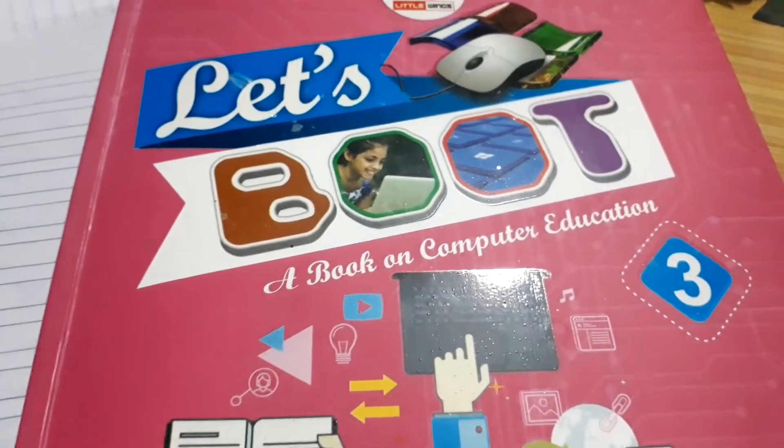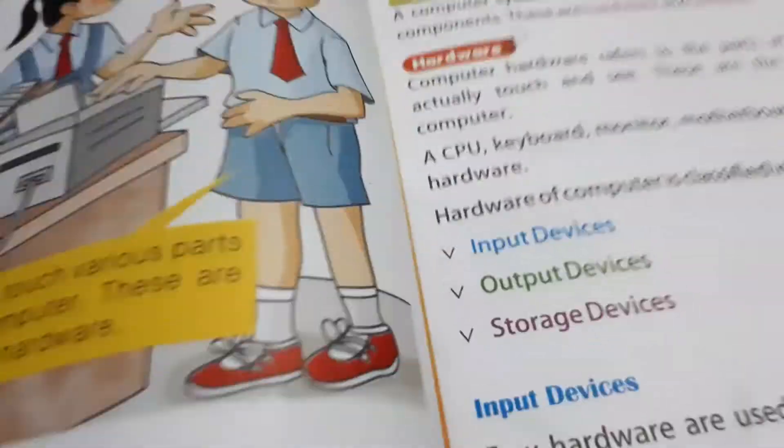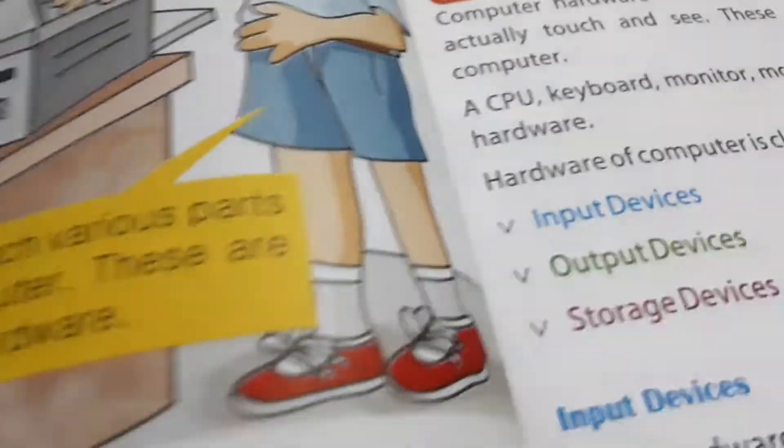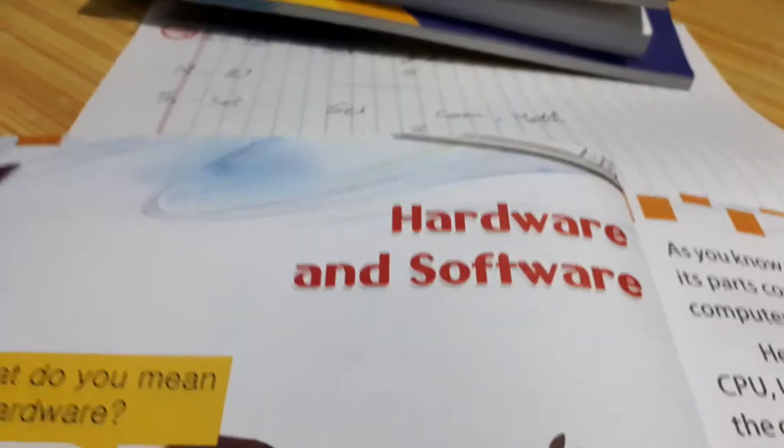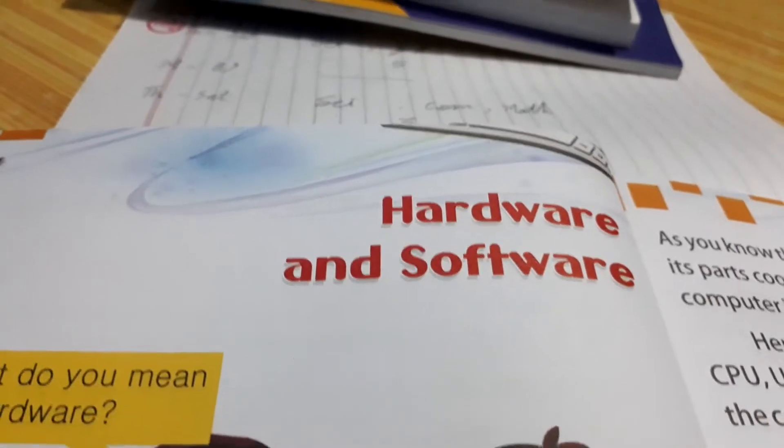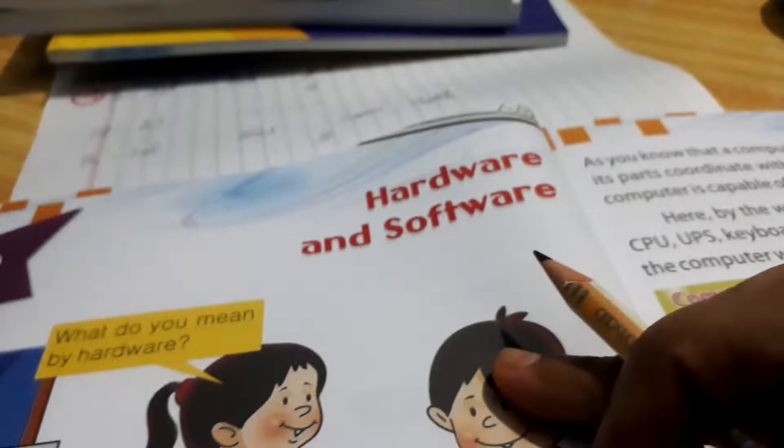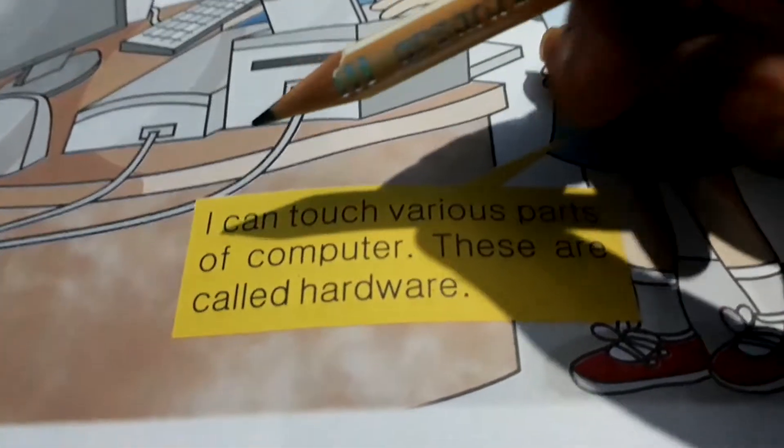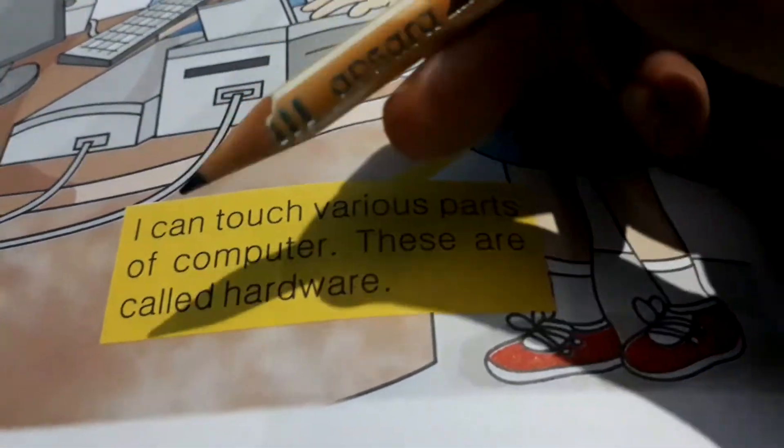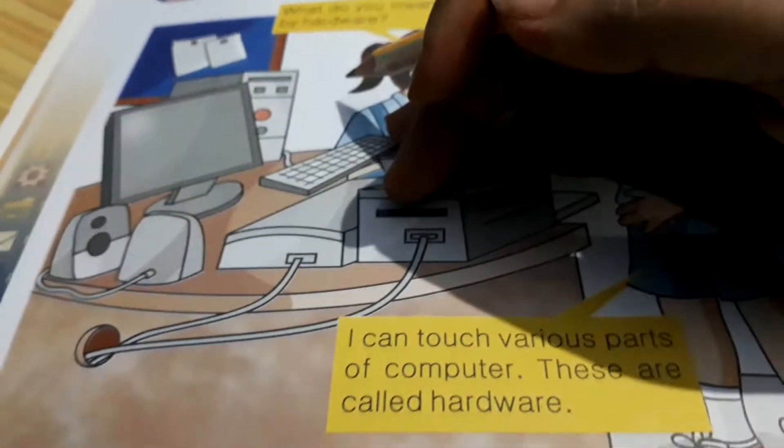Okay class third, computer. We have already done chapter first, now time of chapter second. The chapter second name is hardware and software. You know what is hardware, what is software. So now first we are talking about hardware, we are discussing about hardware. I can touch various part of computer. Computer ke jitne bhi various part hain unko jinko touch kar sakte hain, these are called hardware.